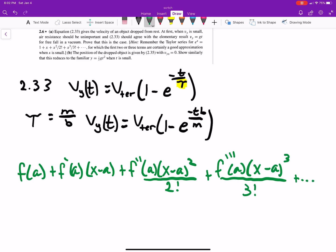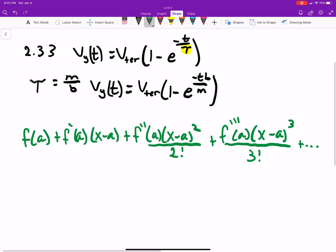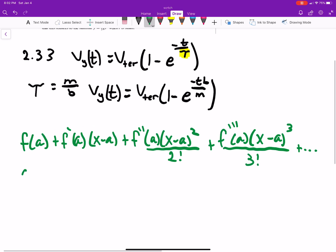All over 2 factorial plus f triple prime evaluated at a times x minus a cubed over 3 factorial. And you can probably see the pattern here. Once I talk a little bit more about series and sequences, I might do a calculus series. But essentially what you're doing is this. And you'd keep doing this forever, but if you want an approximation, then what I just did now will get you pretty close. So what is a? a is what you're centering at. In this case we'll just let a be zero. And then factorial, you know, three factorial is three times two times one. Two factorial is two times one. Hopefully you guys are okay with that notation.